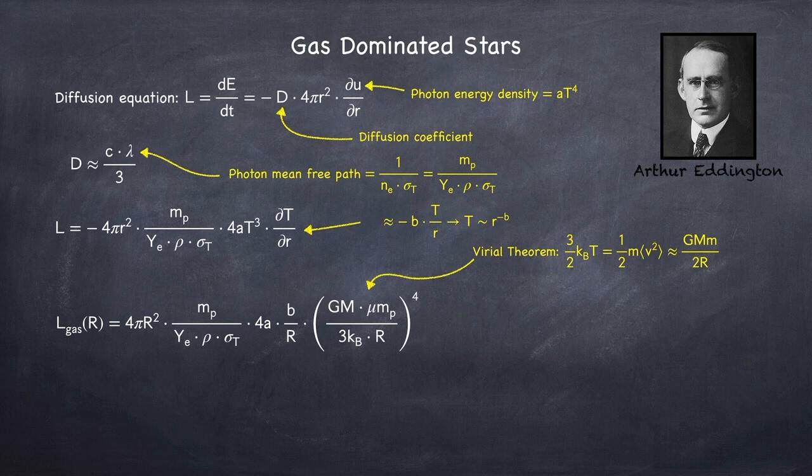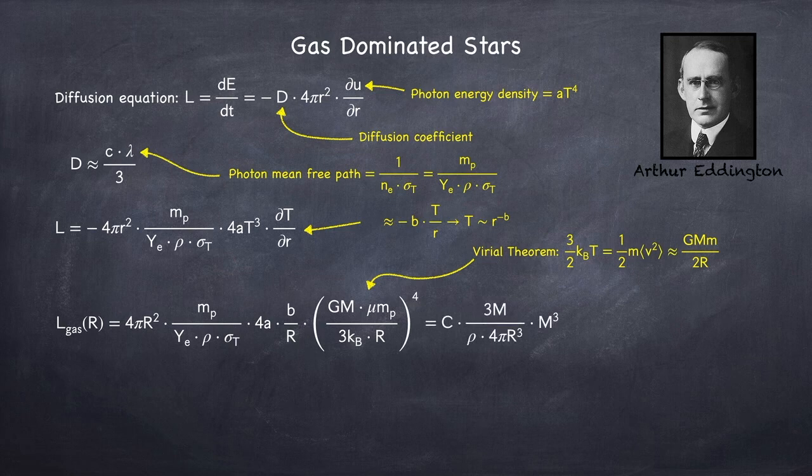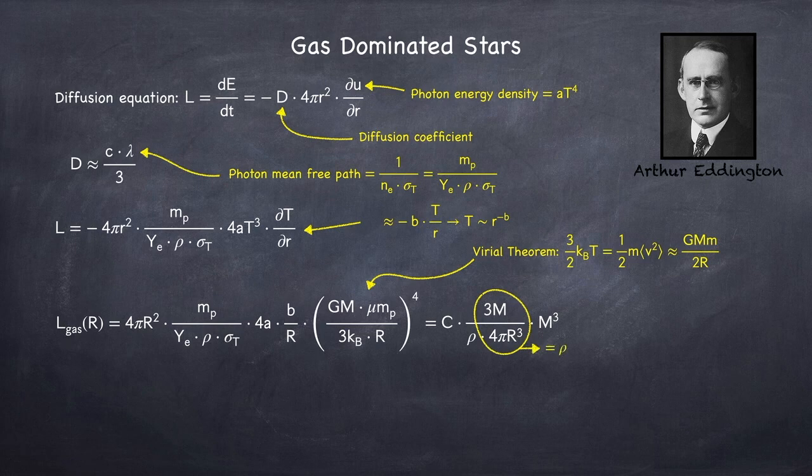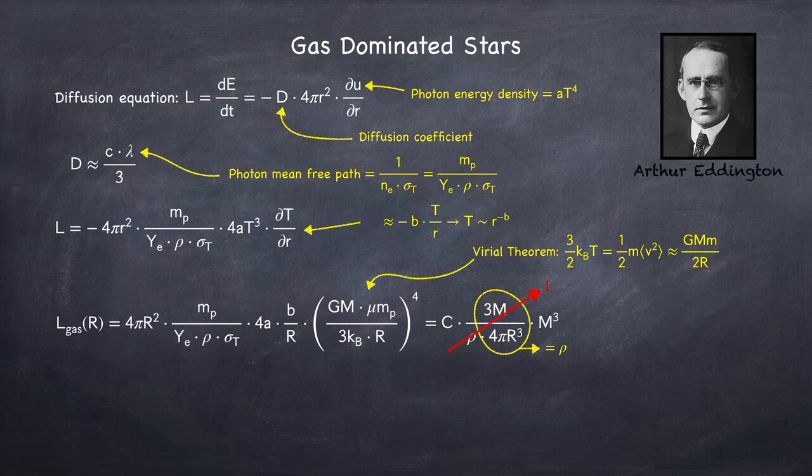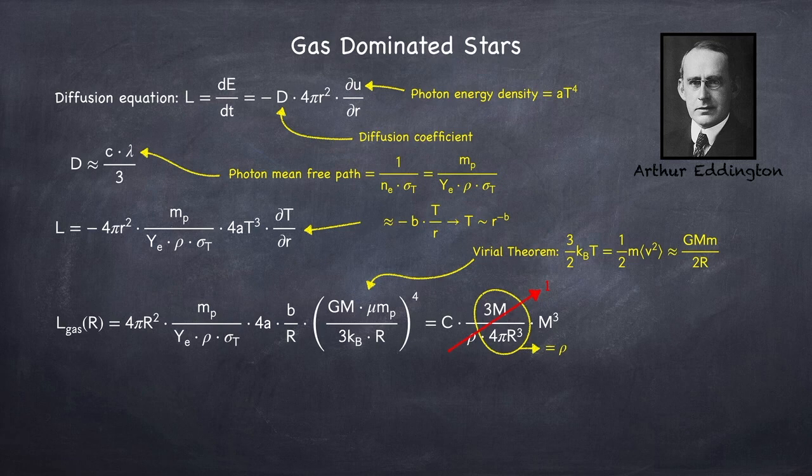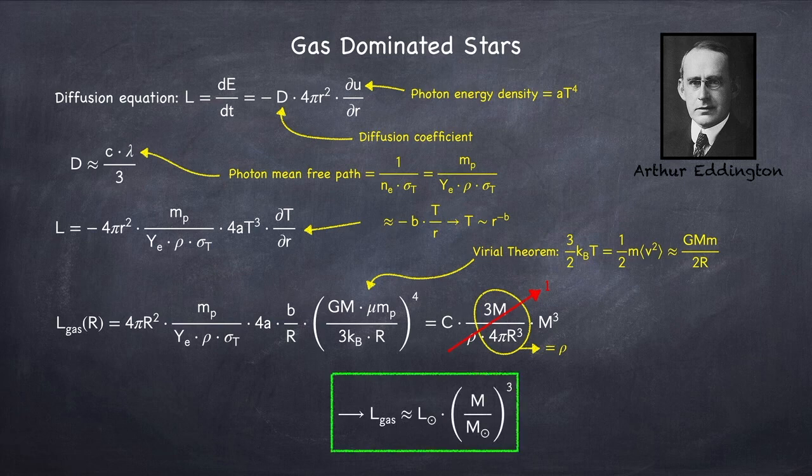Since we don't know what b is, I'm going to rearrange this and group all the constants together into one big constant c. Now take a look at this quantity here, 3m over 4pi r cubed. Well that's just the mass over the volume, so that's density, and since we're already dividing by density, this whole fraction cancels to 1. In order to find c, since we know that the sun is a gas-dominated star, we can plug in one solar mass and set this equal to a solar luminosity. So finally we get that for gas-dominated stars, the luminosity is one solar luminosity times the mass of the star cubed in units of solar masses.